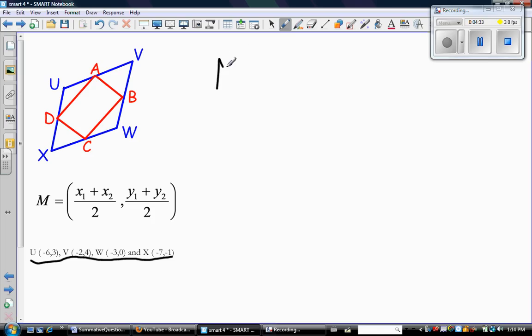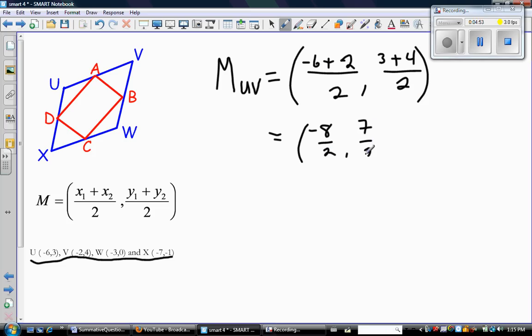Midpoint of U, V is x1 plus x2 divided by 2, y1 plus y2 divided by 2. So that gives me negative 8 over 2 and 7 over 2. And negative 8 over 2 is negative 4. Can't reduce 7 over 2, so I leave it. And that's the point that we called point A. So there's point A.